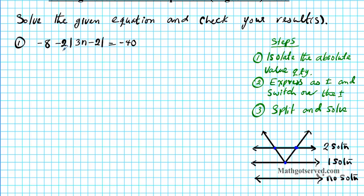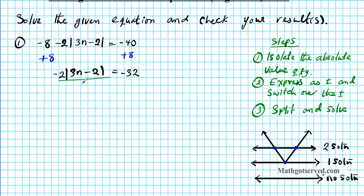Let's go ahead and solve this equation. In the process I'll show you one trick to discern if your absolute value equation is going to have solutions or not. Part one is to isolate the absolute value quantity. To do that, I'll get rid of negative 8 first by adding 8 to both sides of the equation. That gives negative 2 times the absolute value of 3n minus 2 equals negative 32. Then divide both sides by negative 2, giving the absolute value of 3n minus 2 equals positive 16.